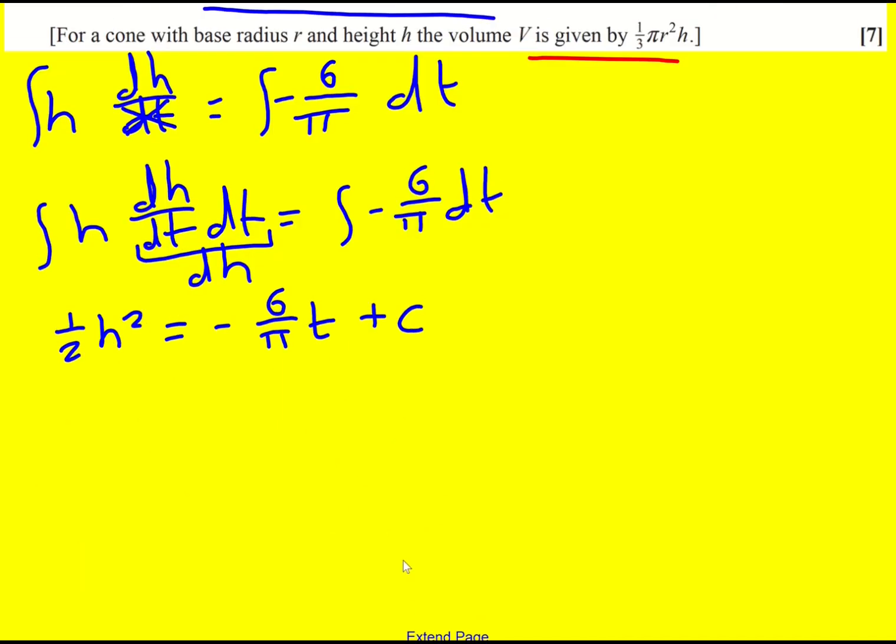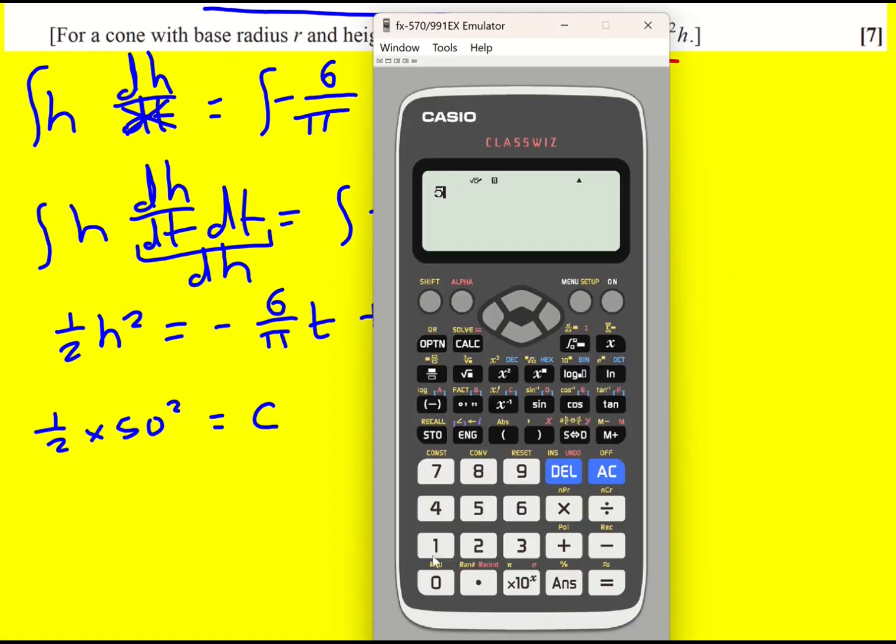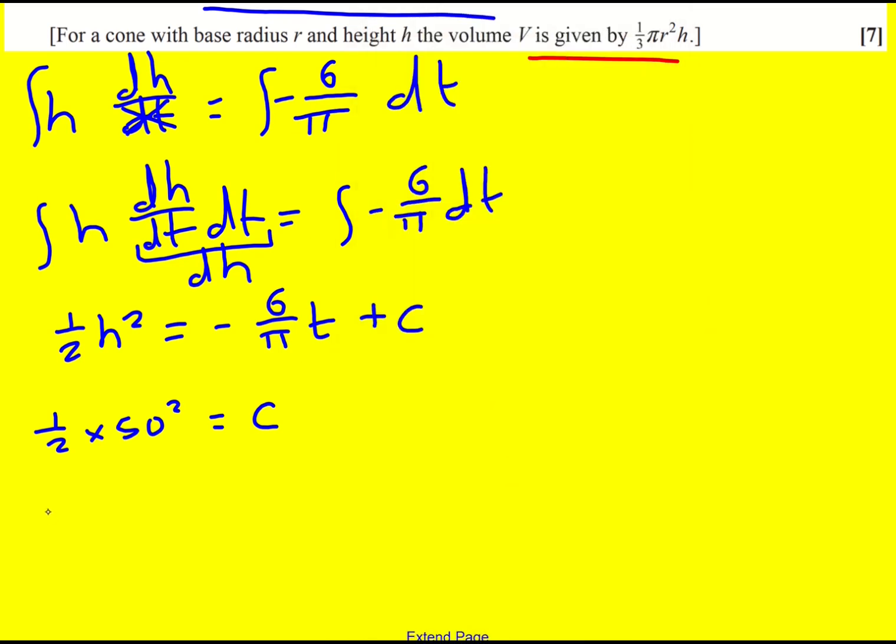Remember we had that condition that H is equal to 50 when T is 0. So that means C is going to be 50 squared over 2, which is 1250. So that means that a half H squared is equal to 1250 minus 6 over pi T. And I've got my equation.